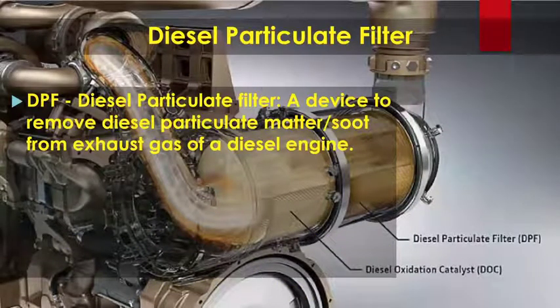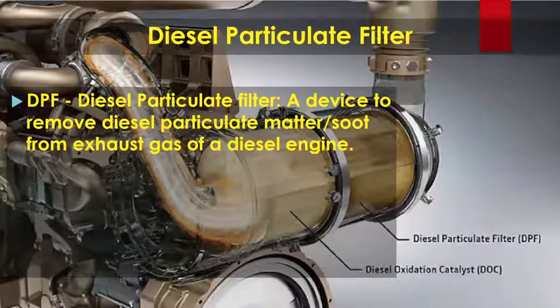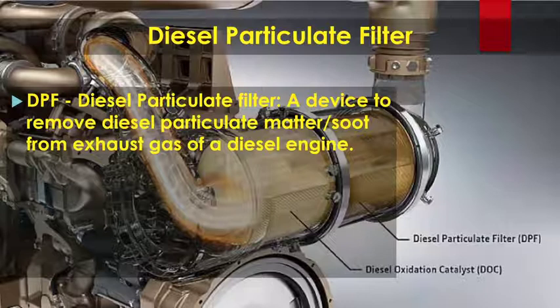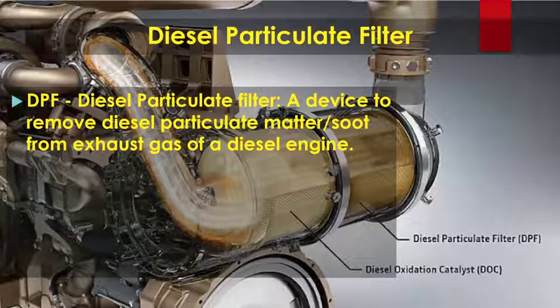The diesel particulate filter, or DPF, traps particulate matter and soot. Exhaust gas passes through channels in the ceramic filter core, moving through porous channel walls until it exits through an open outlet. While the exhaust gas circulates through the filter, particulates are trapped on the channel walls, which are coated with precious metals that aid in oxidation of the particulate matter. The oxidation of the particulate matter in the DPF is called regeneration.